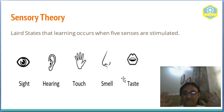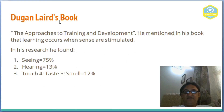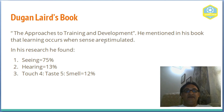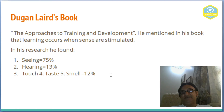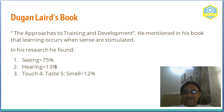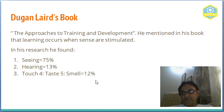This is from Dagan Laird's book, 'Approaches to Training and Development.' He mentions how much percentage each sense contributes. In his research he found: seeing is 75%, hearing is 13%, and the remaining senses — touch, taste, and smell — together account for 12% of learning.